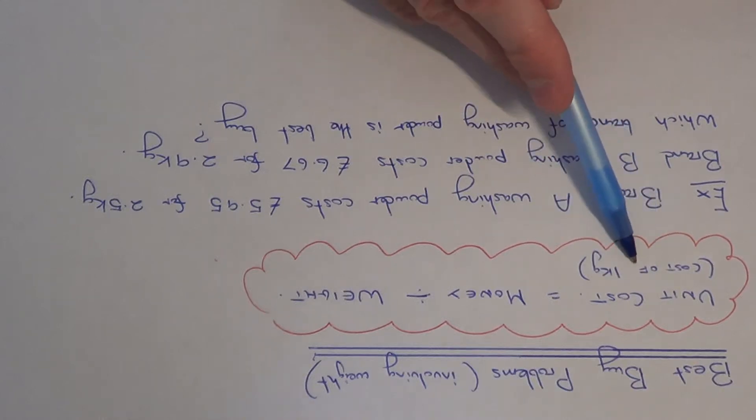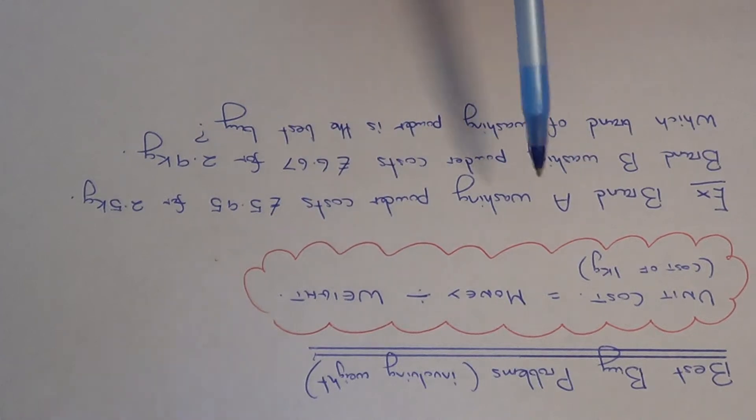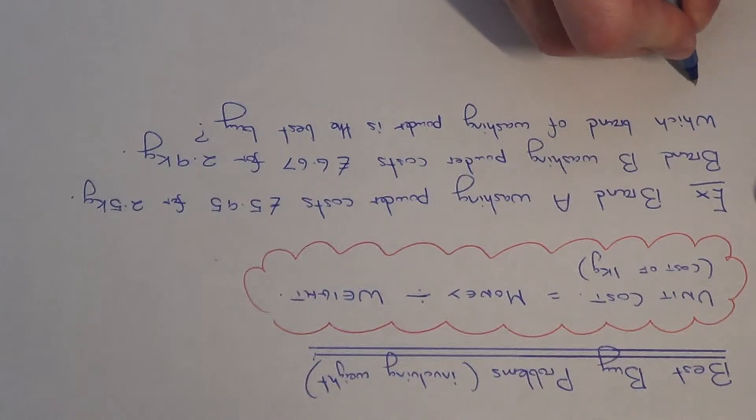So unit cost, that's the cost of one kilogram. You get the money and you divide it by the weight. So let's do that for brand A washing powder.